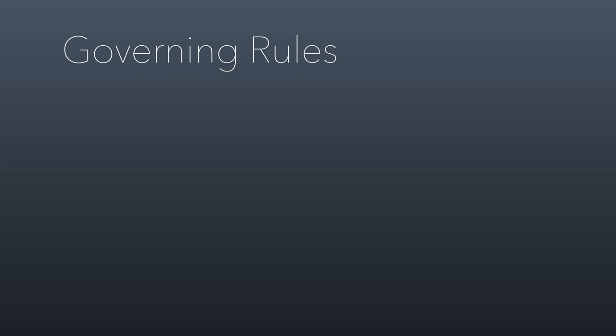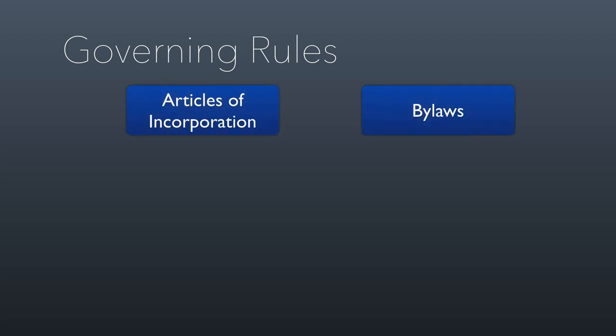All corporations have two sets of governing rules that determine the way they operate: the articles of incorporation and the bylaws. The articles of incorporation are filed with the state where the nonprofit is incorporated, and this is actually how you create the corporation to begin with. It used to require physically going to a state office with printed articles, but now it's done online — though they're still filed and made official with the state.